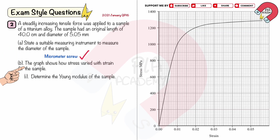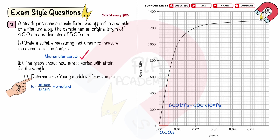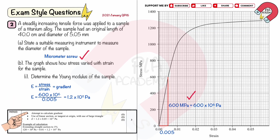Part B1: the graph shows how stress varied with strain for the sample. Determine the Young's modulus of the sample. Young's modulus is stress divided by strain, so the gradient of the stress-strain graph is the Young's modulus. Drawing the triangle on the straight line section in the graph: delta x equals 0.005, delta y equals 600 × 10⁶ pascals. So the gradient is 600 × 10⁶ divided by 0.005, giving Young's modulus equals 1.2 × 10¹¹ pascals. You will get 3 marks for: attempting to calculate the gradient, using the initial linear section, and an answer in the range 1.15 to 1.25 × 10¹¹ pascals.